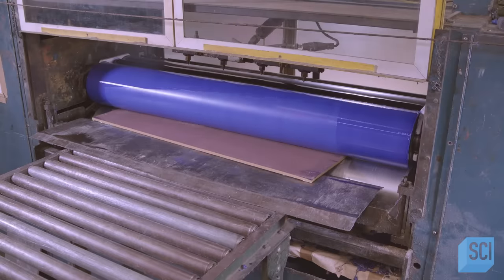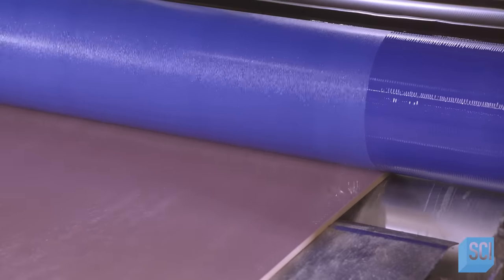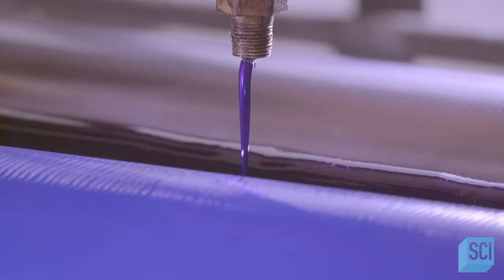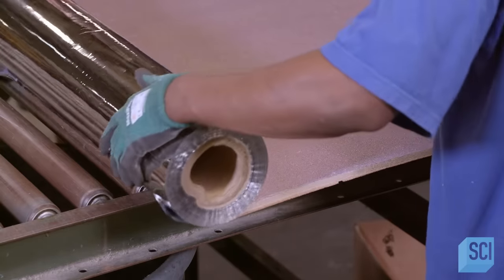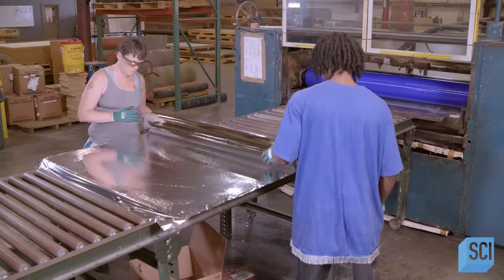Next, the substrate is put through a hot glue machine. The machine applies polyurethane adhesive to what will be the back of the dry erase board. As the substrate exits, a sheet of foil is applied to the glued surface.